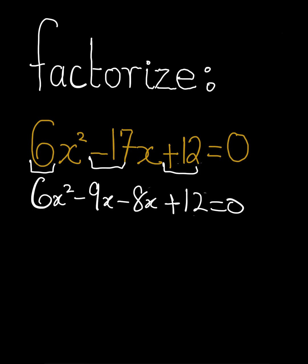Now, we're going to group them together. To do that, we have our 6x squared minus 9x in one bracket minus into bracket 8x minus 12, not plus 12. So that we can get minus and minus, plus 12, all equal to 0.